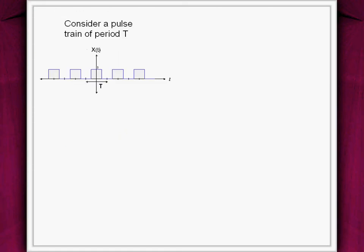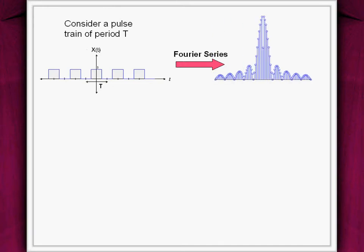Now look at something interesting that happens to Fourier series. We begin with the rectangular pulse train. The plot of its Fourier series coefficients is also shown.